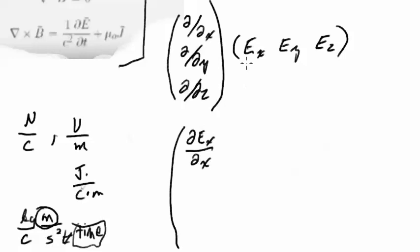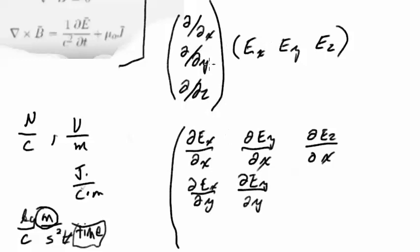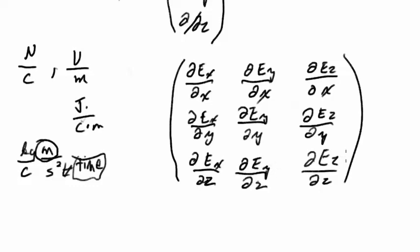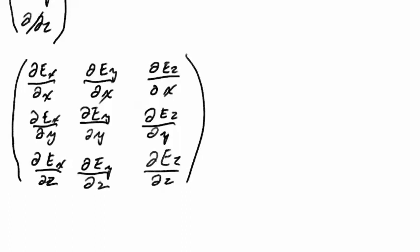It consists of del E sub x/del x, del E sub y/del x, del E sub z/del x, del E sub x/del y, del E sub y/del y, del E sub z/del y, del E sub x/del z, del E sub y/del z, del E sub z/del z. Now I'm going to do something over here with a little bit of some arrows. I'm going to represent a right-handed coordinate system with x going this way, y going this way into the page, and z coming up this way.